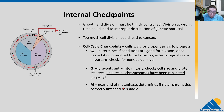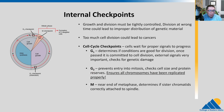Once we pass the G2 checkpoint, we enter mitosis, and near the end of metaphase there is a checkpoint that determines if all the sister chromatids are properly attached to the spindle fibers and everything's ready to be pulled apart. Once we go past that, we finish cell division. So these three checkpoints: G1 — are we going to start dividing? G2 — have all chromosomes been replicated properly? M phase in metaphase — is everything attached properly to be pulled apart?